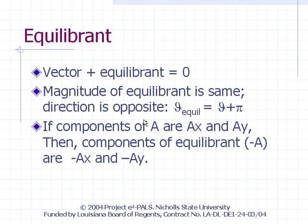The term equilibrant refers to the vector that, if added to another vector, leads to a zero sum. In other words, the sum of a vector and its equilibrant is zero. For any vector, the magnitude of the equilibrant is the same, but its direction is completely opposite — theta for the equilibrant is 180 degrees from the theta for the vector. Note that in radians, 180 degrees equals pi. In terms of components, the components of the equilibrant are simply the additive inverse of the components of the original vector: the x component of the equilibrant of vector A is negative AX, and the y component is negative AY.